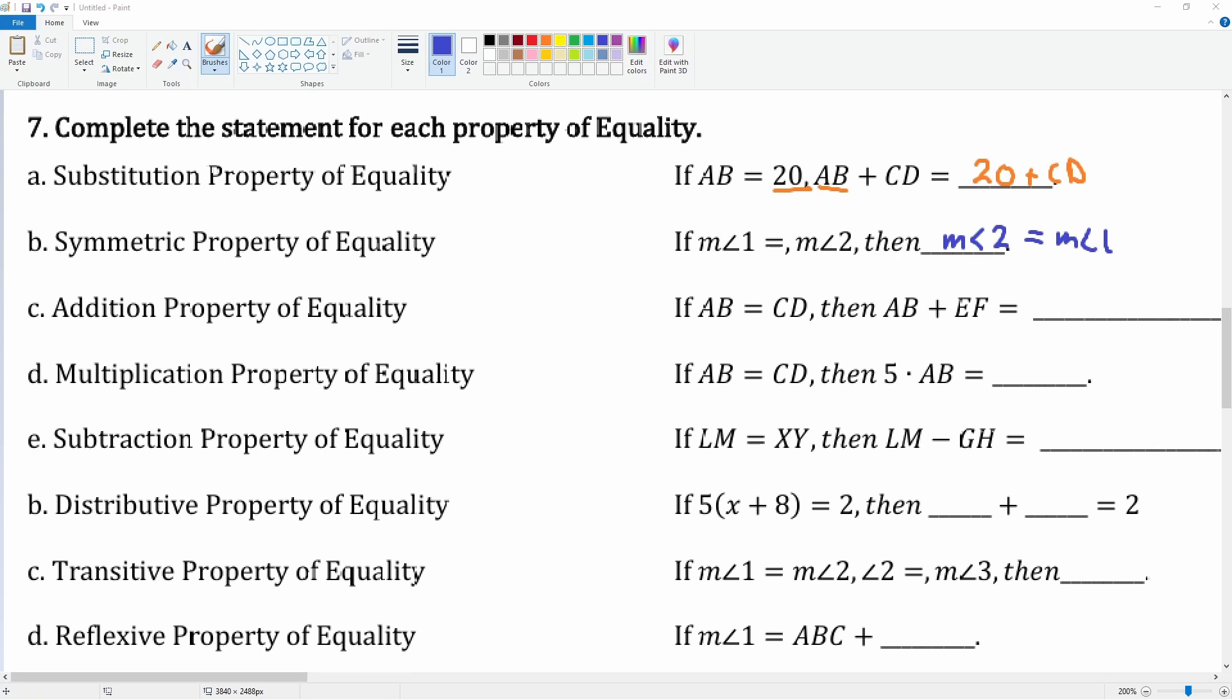After that, we can now look at the addition property. Notice AB is equal to CD. Here they add EF, so therefore CD will also have EF added to it.